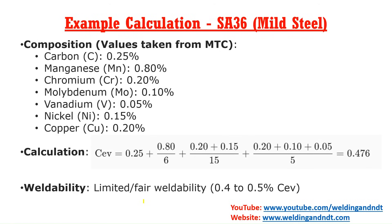Now we will calculate the carbon equivalent of SA36, which is a mild steel grade material. I have taken the values of carbon, manganese, chromium, molybdenum, vanadium, nickel, and copper from an MTC of SA36, and by putting those values into the formula we will get the carbon equivalent of SA36.